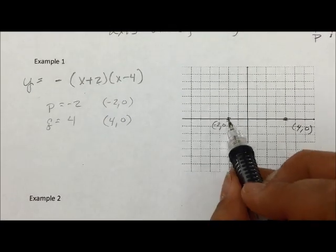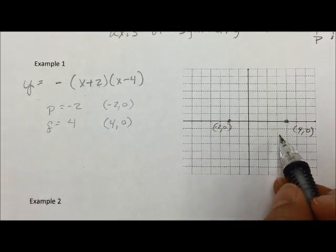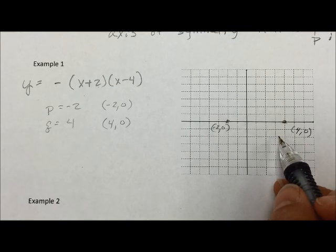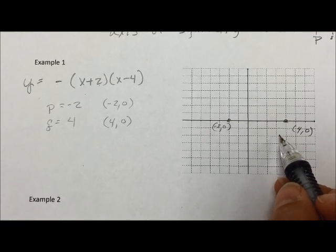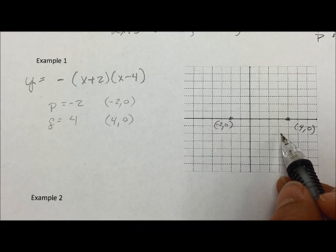Next, so I've found the two places where the graph crosses the x-axis. The next thing I want to find is my axis of symmetry. If I have my axis of symmetry, that will tell me where the vertex is.